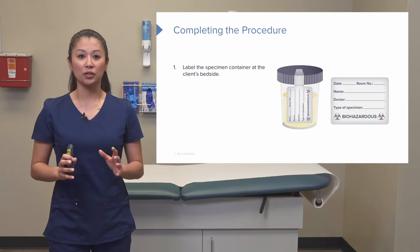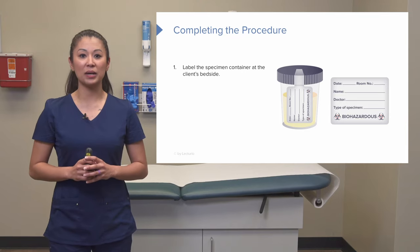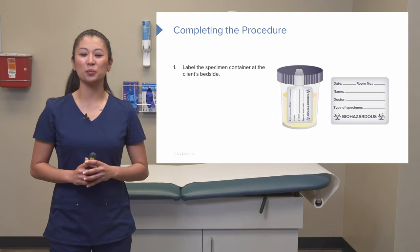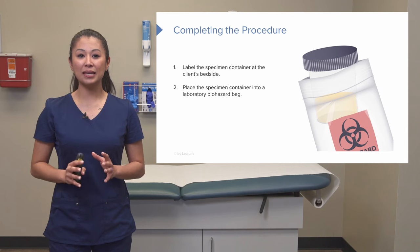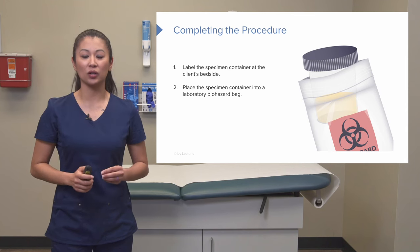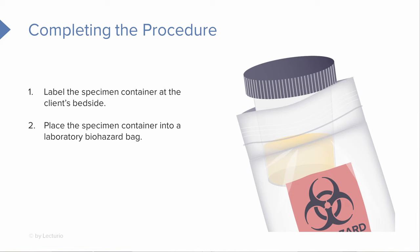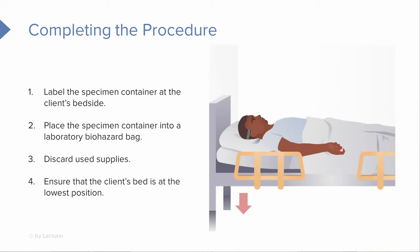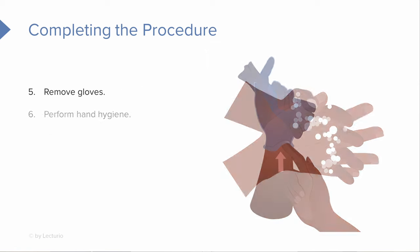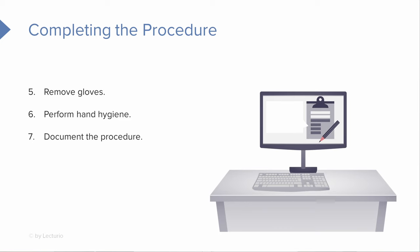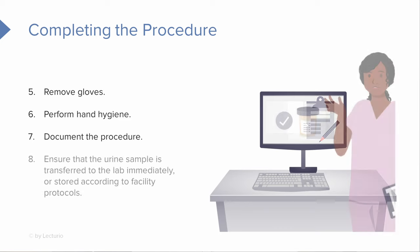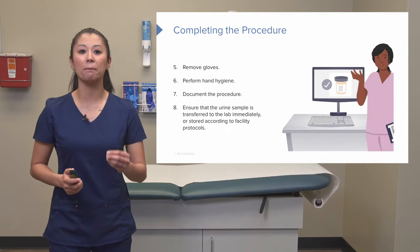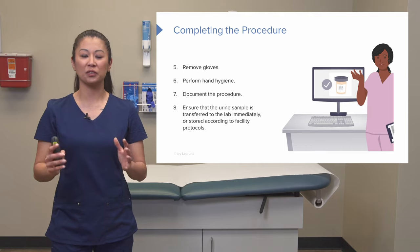Upon completing the procedure, label the specimen container at the client's bedside — this is a great idea so we can double check those patient identifiers. Ensure that the specimen container gets into the laboratory biohazard bag. Discard your used supplies and put the patient back in the lowest position for safety. Remove your gloves, perform your hand hygiene, and don't forget to document your procedure. Make sure the urine specimen is transferred to the lab immediately or stored according to facility protocol.